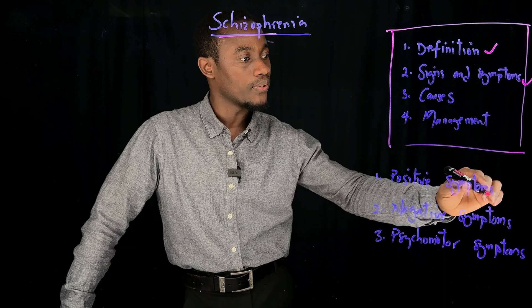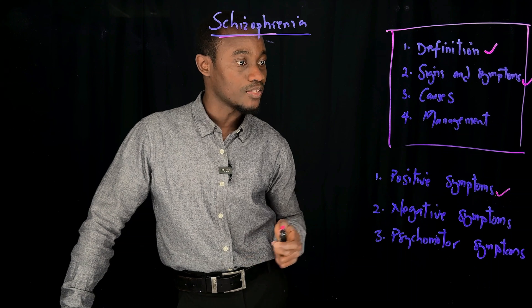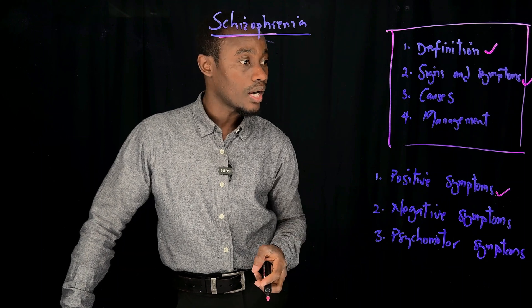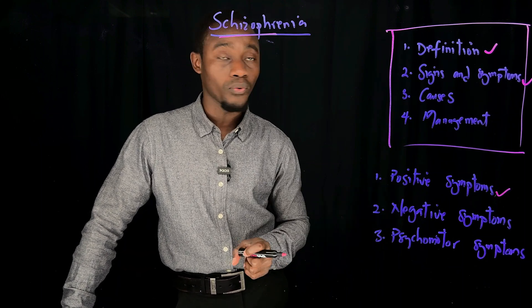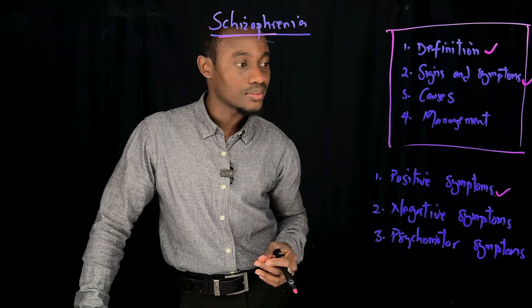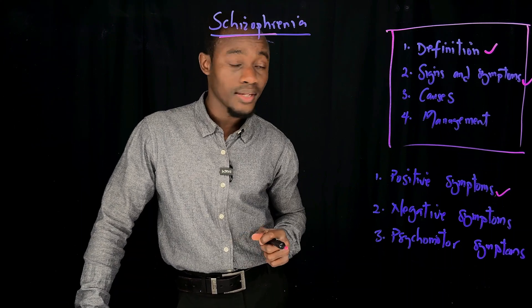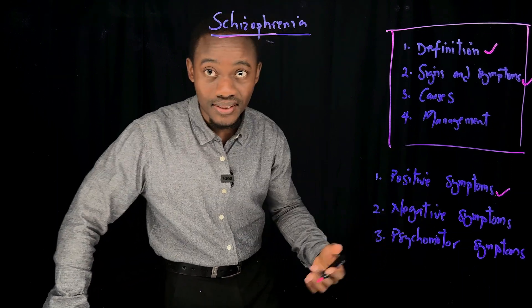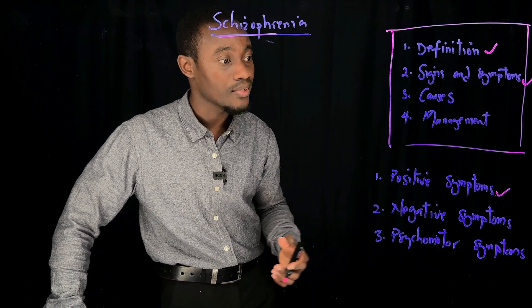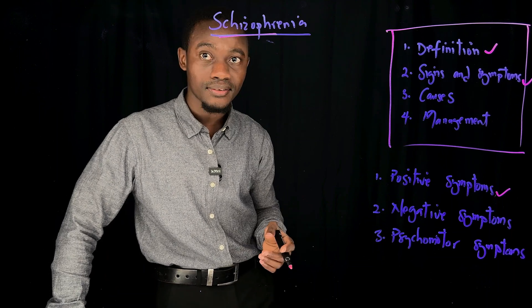I will start by explaining the positive signs and symptoms of Schizophrenia. I have a separate video where I explained the positive, negative and psychomotor symptoms of psychosis in more detail, so I won't go into too much depth here. The positive symptoms of Schizophrenia are those symptoms that are present in individuals with Schizophrenia but absent in the ordinary population — they are the signs and symptoms a person develops after getting Schizophrenia. There are three main positive signs and symptoms: hallucinations, delusions, and disorganized thinking.